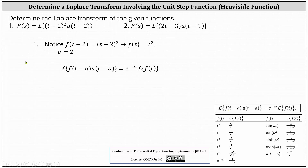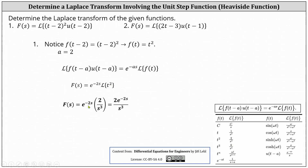The Laplace transform equals e to the power of negative a·s times the Laplace transform of f of t, so big F of s equals e to the power of negative two s times the Laplace transform of t squared. Using our table, the Laplace transform of t squared is equal to two divided by s cubed. Therefore, the Laplace transform of the given function is e to the negative two s times two divided by s cubed, or two e to the negative two s divided by s cubed.